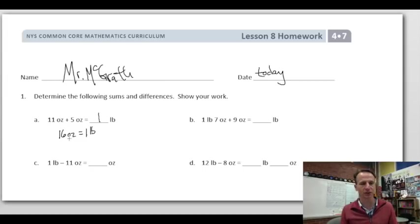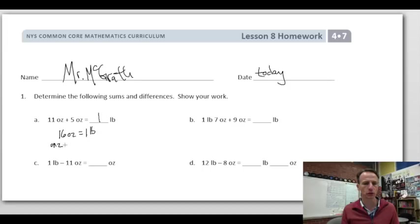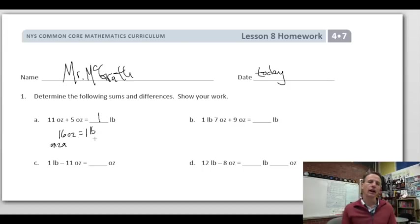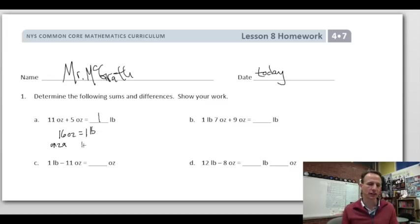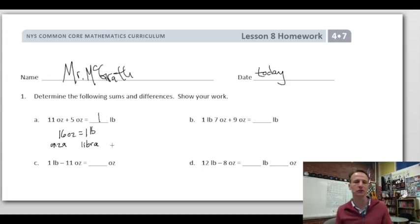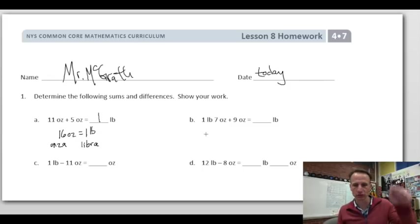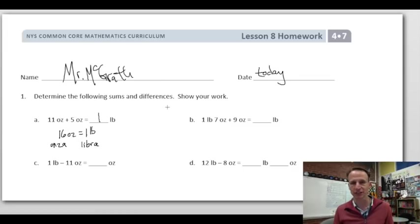The abbreviation 'oz' for ounce makes no sense unless you know it comes from the Italian word 'onza,' meaning ounce. Similarly, 'lb' for pound comes from the Latin word 'libra,' meaning weight or measure — like the astrological symbol of Libra holding scales. That's why we have those unusual abbreviations in this system.